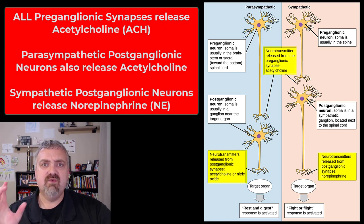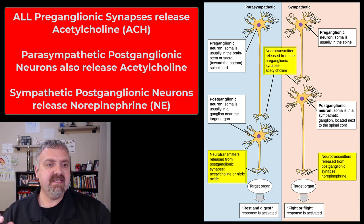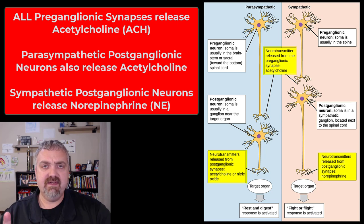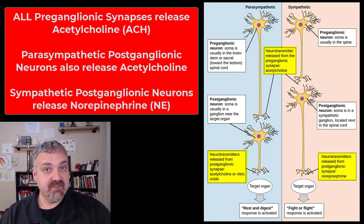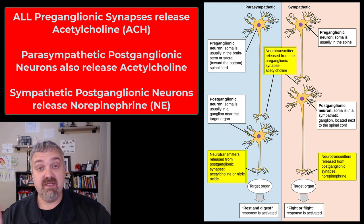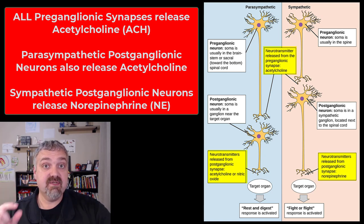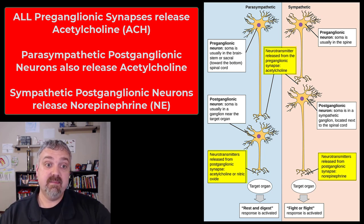The other thing to note is which neurotransmitters are being used — it's something you just have to know. With the parasympathetic nervous system, it's almost always acetylcholine. So the pre-ganglionic neurons release acetylcholine and the post-ganglionic neurons also release acetylcholine. Some do release nitric oxide, which is an interesting vasodilator, but that's not worth noting. For the parasympathetic system, just think acetylcholine as the only key neurotransmitter.